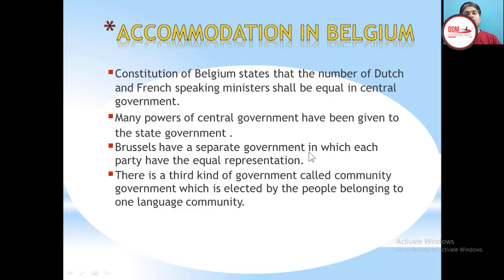Third, Brussels has a separate government in which each party has equal representation, so equality is maintained there as well. There is also a third kind of government called the community government, which is elected by people belonging to one language community — they vote for their own community people only. This was an experiment by Belgium and a very successful one; through this they maintained harmony and equality in their administration.